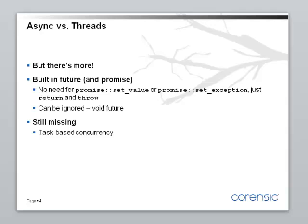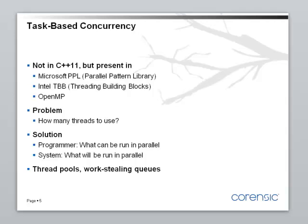What is still missing in the C++11 standard is task-based concurrency, which is pretty disappointing. Task-based concurrency is not implemented in C++11, but it is present in some libraries — in particular, Microsoft's Parallel Pattern Library implements it, as does Intel Threading Building Blocks. There's also OpenMP, which is a set of macros, a language extension plus a runtime library.